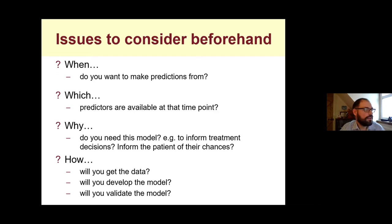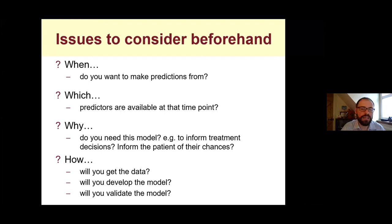Which predictors are available at that time point? If you don't have knowledge of what predictors could be useful, you can't build a good prediction model. For a model to be used in practice, the clinician must have those predictors available at the point of contact — they must be easily measured. And why do you need this model? Does it have a compelling clinical use? It's easy to produce just another clinical prediction model paper, but if it's not going to be used, it's research waste. If it's not developed properly, it's also research waste and can potentially cause harm to patients.